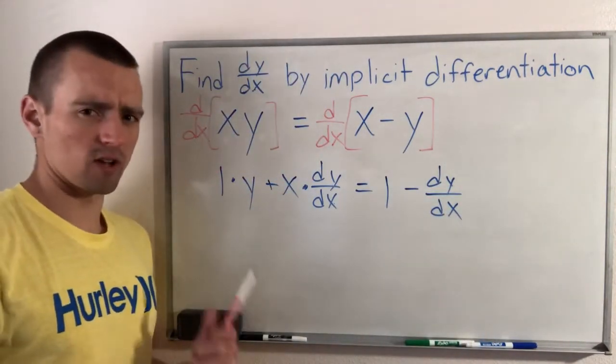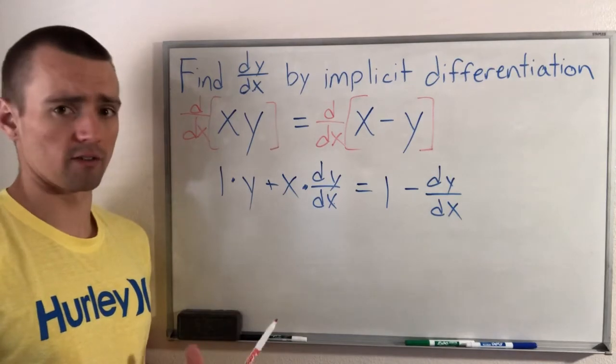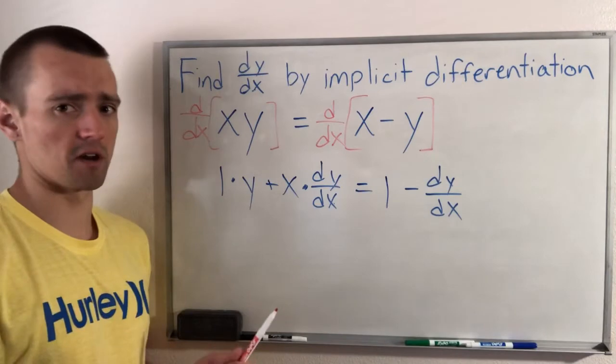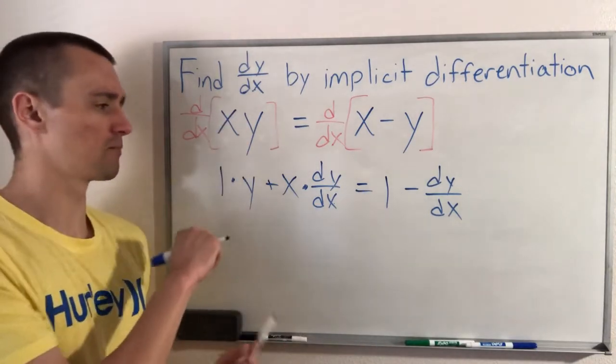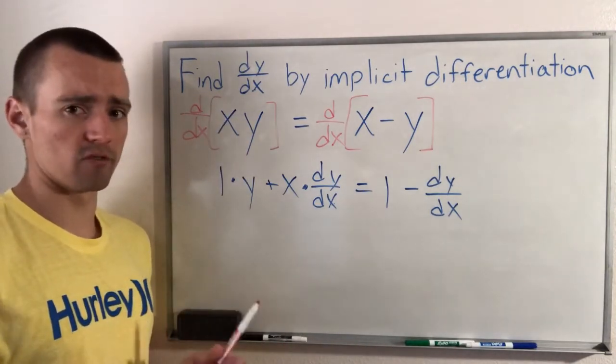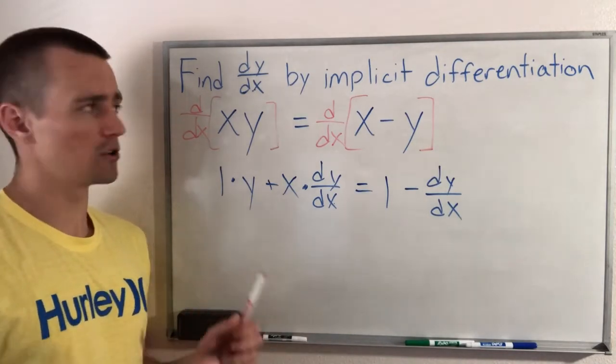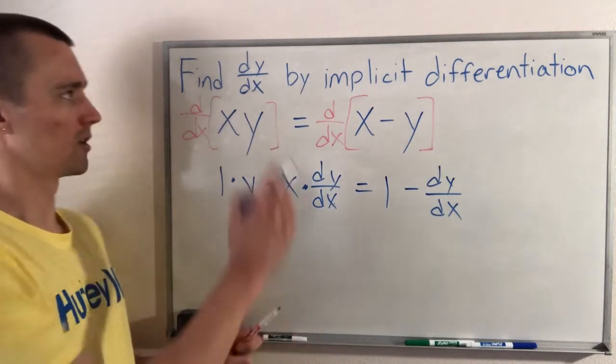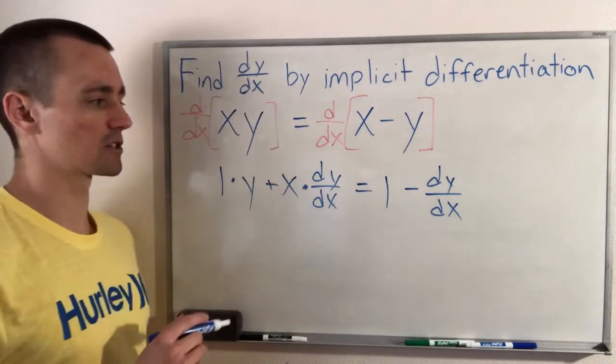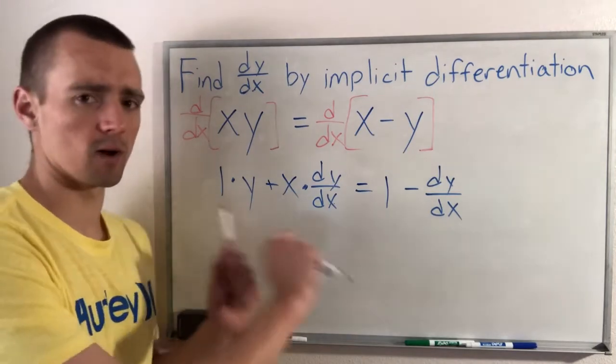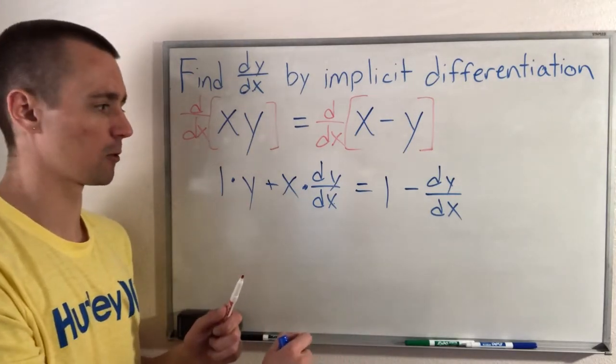So now we're going to follow a similar process to other implicit differentiation problems. First thing you want to do is apply implicit differentiation. That's what we just did here. Once you've found the derivative of both sides, then what you want to do is get all your terms with the thing you're looking for. So in this case, all of our dy/dx terms over onto one side of the equation. And all of our non-dy/dx terms over to the other side of our equation.